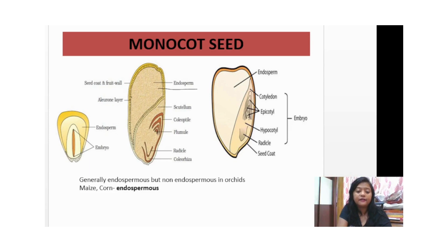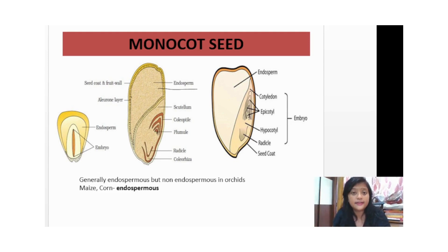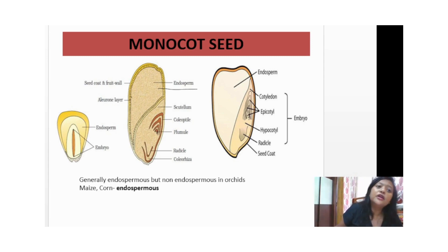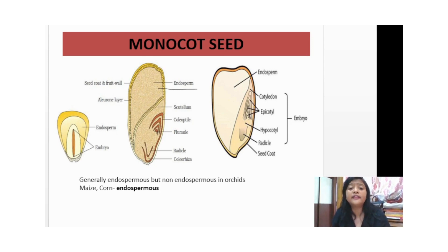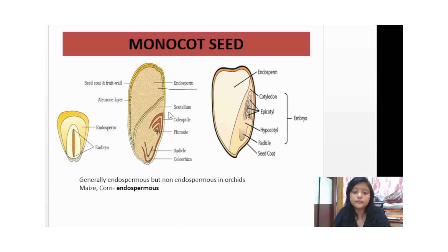The aleurone layer nourishes the embryo. Don't confuse it with the endosperm — the endosperm provides food to the seed in the form of starch, while the aleurone layer provides nourishment specifically to the embryo. The aleurone layer separates the endosperm from the outer seed coat, and it is considered the outermost layer of the endosperm.